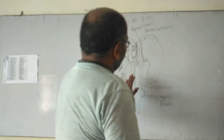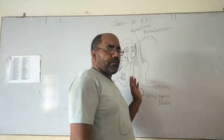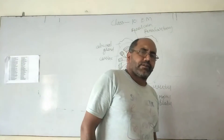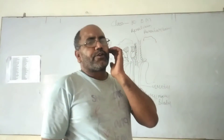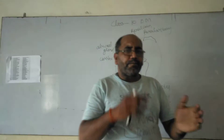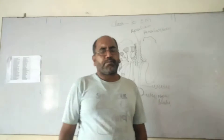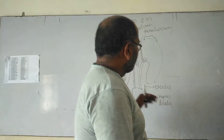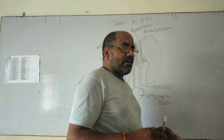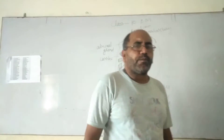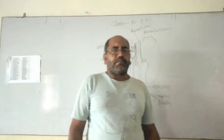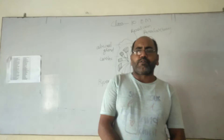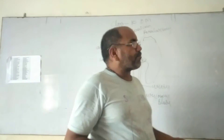Today I am discussing the kidney. The kidney is the main excretory organ of human beings, filtering waste and uric acid from the blood. The kidney is situated in the abdominal cavity, at the back side of the backbone, on both sides.